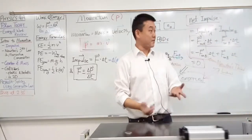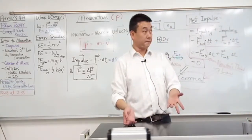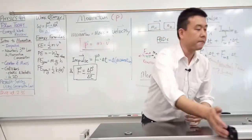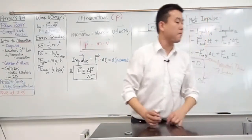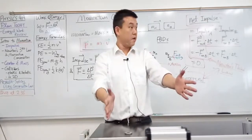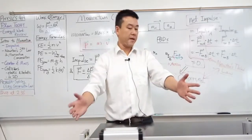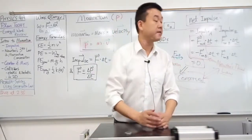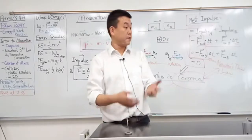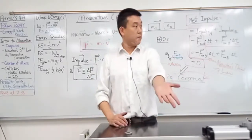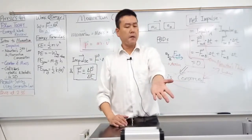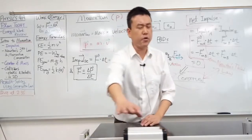Momentum seems to be changing regularly. So when we are trying to describe a system, I want to come up with a statement of condition where I can say: if this condition holds, then momentum is conserved. If this condition doesn't hold, then momentum conservation doesn't hold.